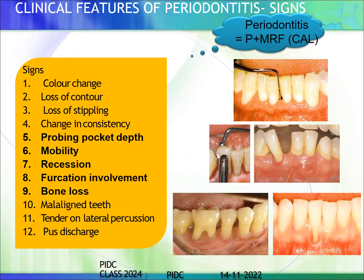Clinical signs include color change, loss of contour, stippling, changes in consistency, probing pocket depth, mobility, recession, furcation involvement, bone loss, elongation of teeth, and pus discharge. Not only should the interdental clinical attachment loss be more than 3 mm, but if you also find pockets, mobility, recession, or furcation involvement, that exactly falls into the category of periodontitis.